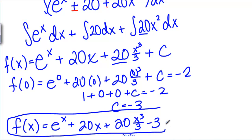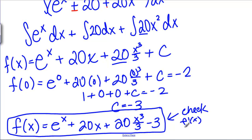So our original function F of X is E to the X plus 20X plus 20X cubed over 3 minus 3. You can verify this by finding F prime and checking F of 0.